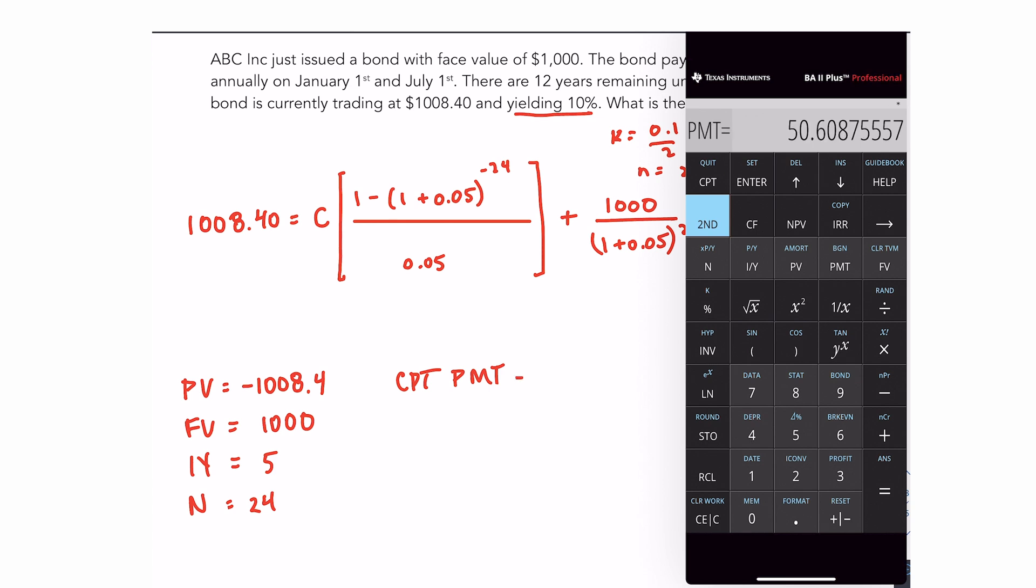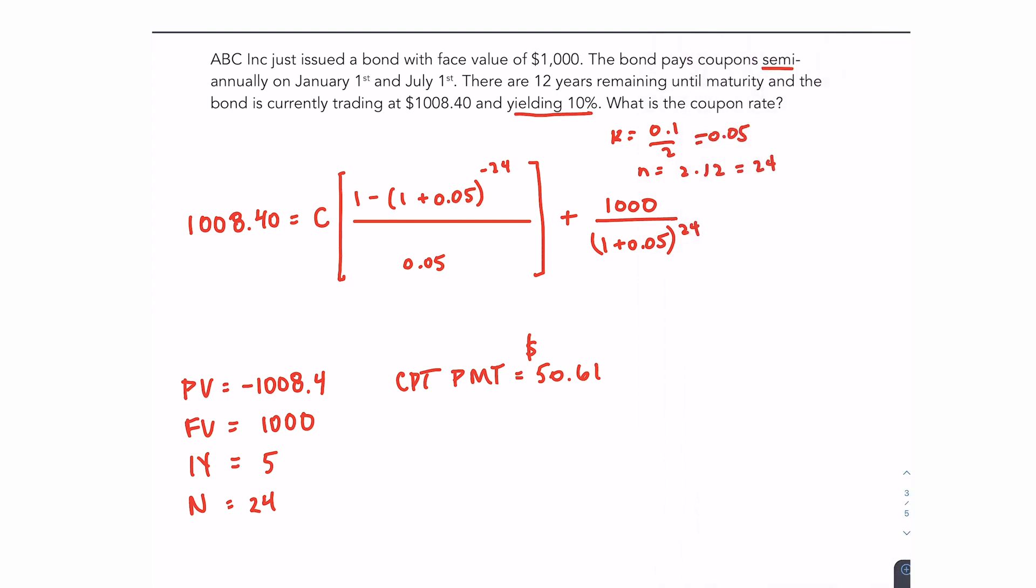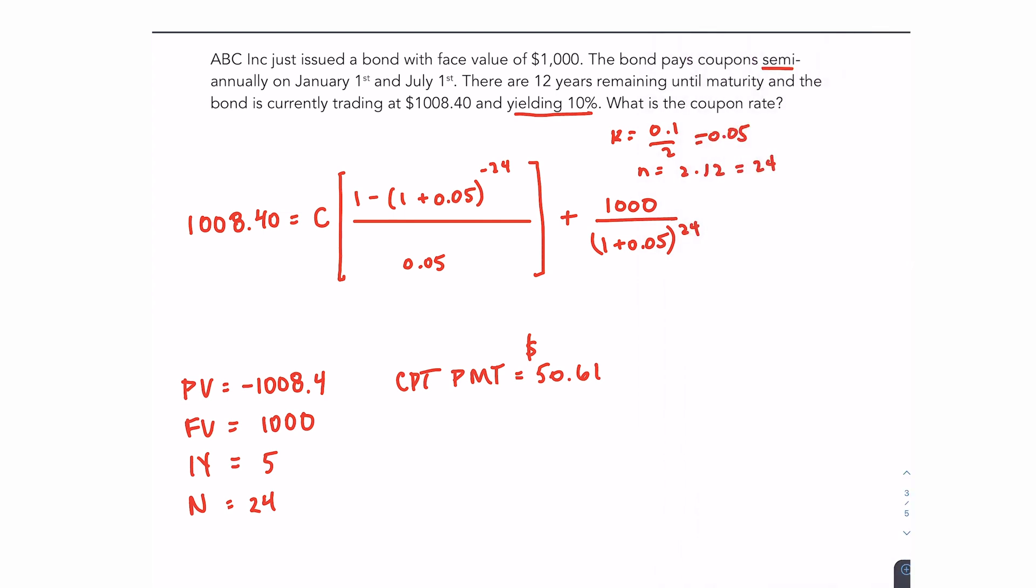And for this, I get a payment of $50 and about 61 cents. If you were to use the formula above and algebraically solve for C, you would get the same thing. Now it might be off a little bit depending on how you round it, but in theory, it should be exactly the same.